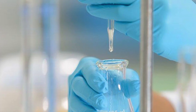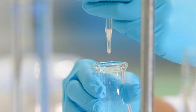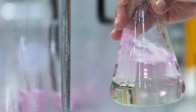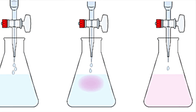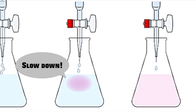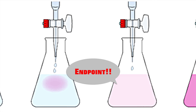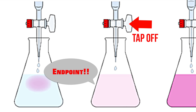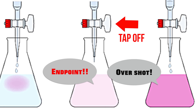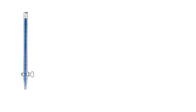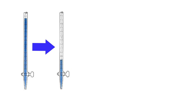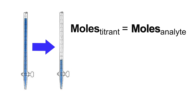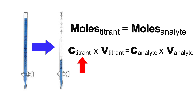Now we are ready to start titration. A titrant is added slowly to the analyte by turning the tap on the burette. Mix the beaker's contents regularly. As the color begins to change, turn the tap to drip slowly until the color of the pH indicator changes. At this point, turn the tap fully off. By reading where the meniscus now lies on the burette scale, we can work out how many milliliters we have added. Since we know the concentration and volume of titrant added and the volume of analyte, we can then work out the concentration of the analyte.